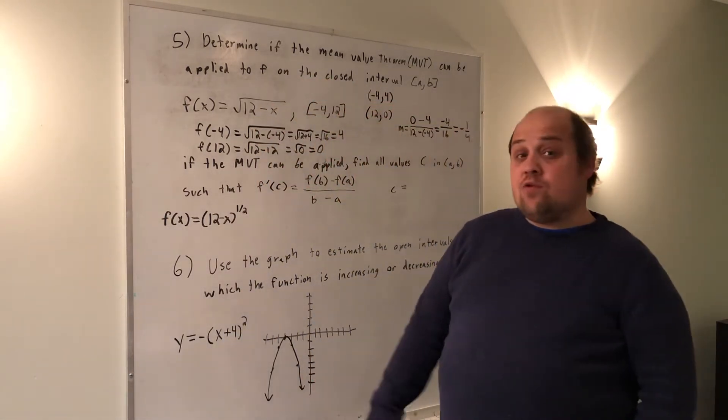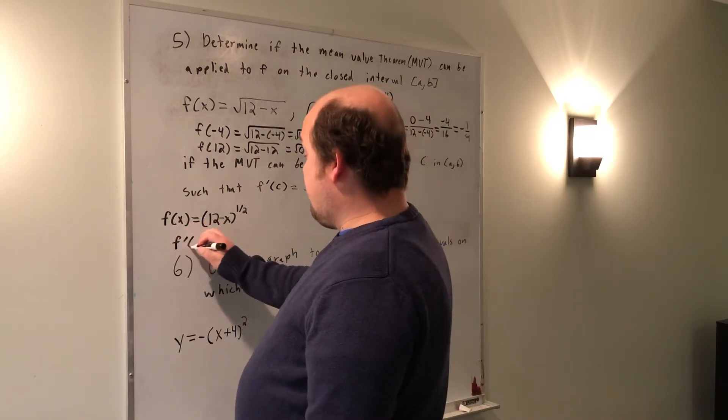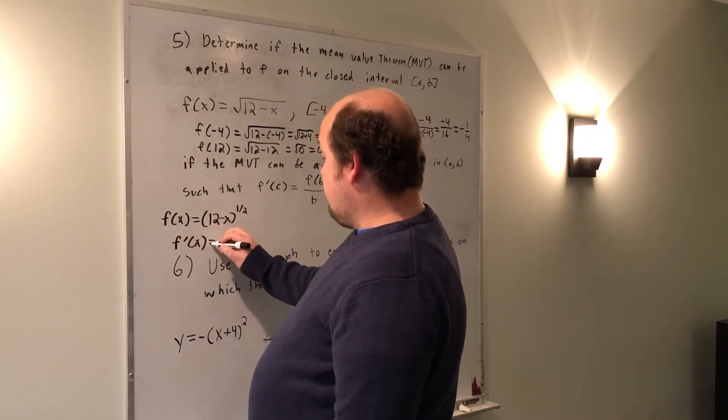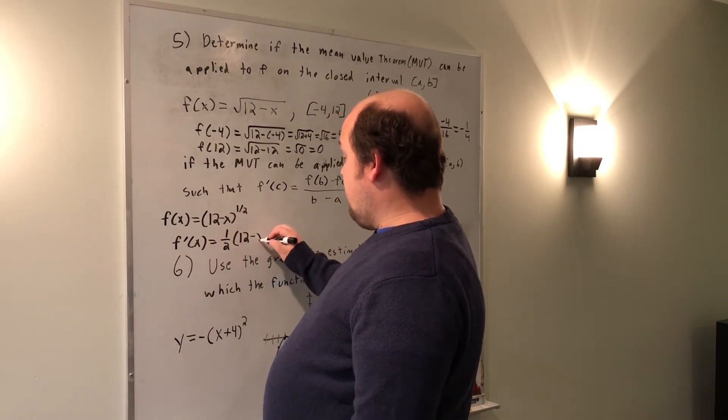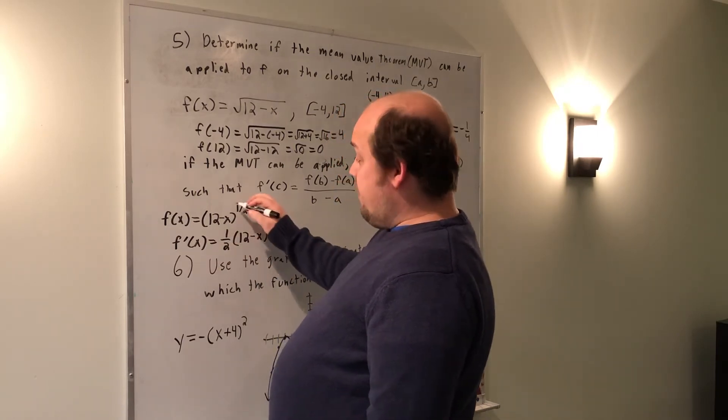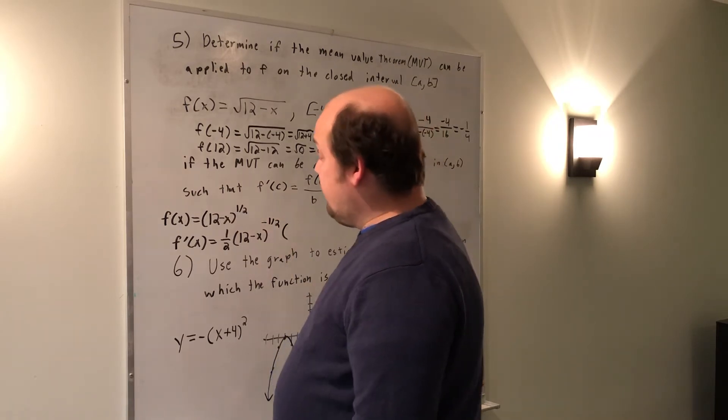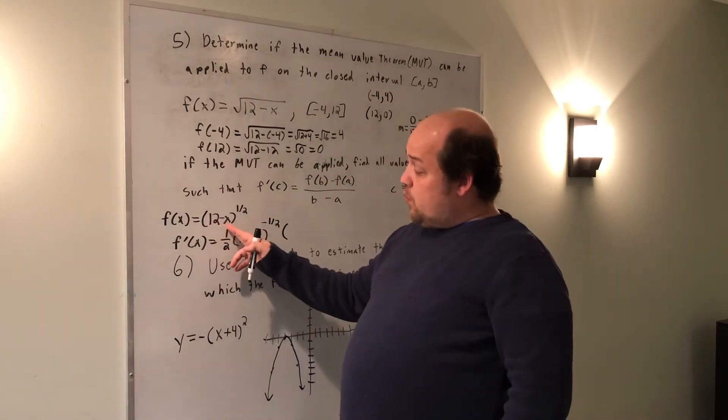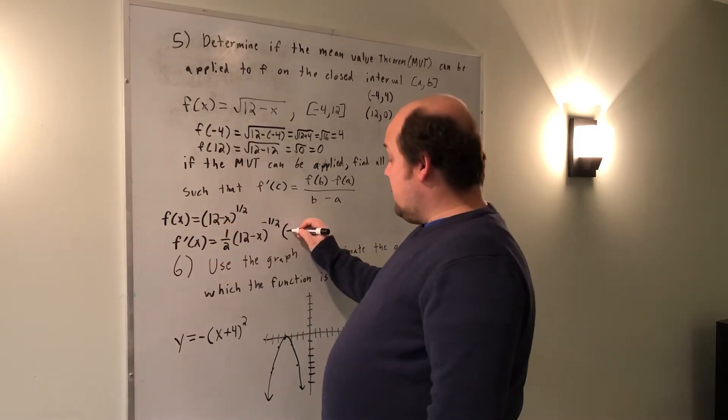Here, I'm going to have to use a chain rule when I take the derivative. So the chain rule tells me f prime of x, the 1 half comes down, it becomes 1 half, same baby inside, 12 minus x, now to the power of 1 half minus 1, or negative 1 half, times the derivative of baby. The derivative of 12 minus x, 12 goes to 0, negative x becomes negative 1.